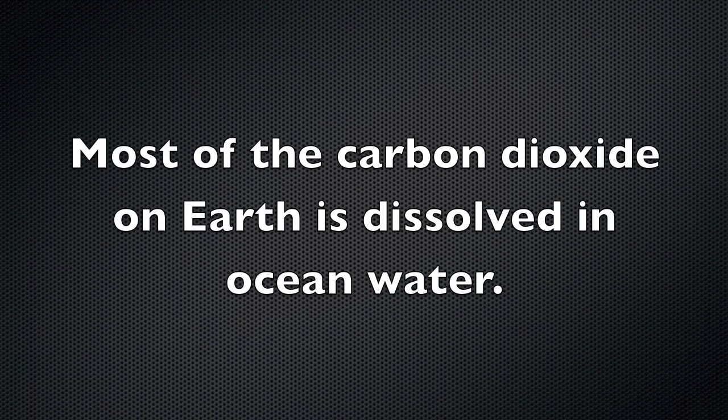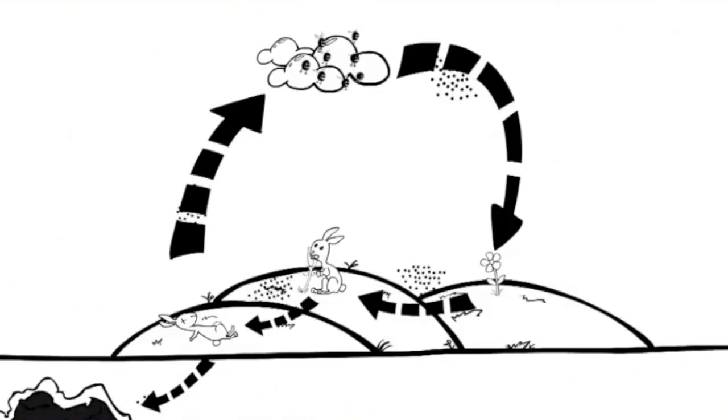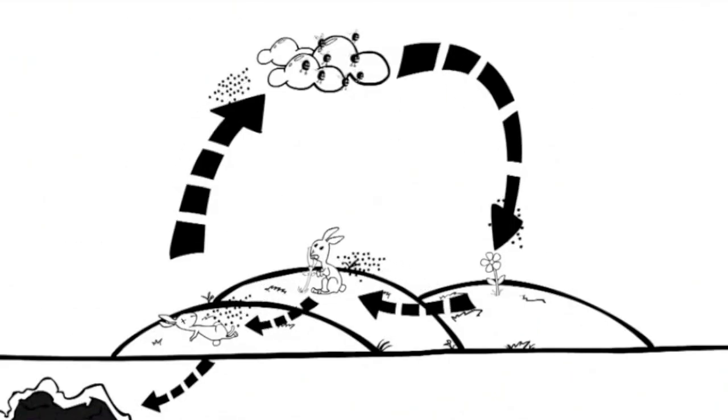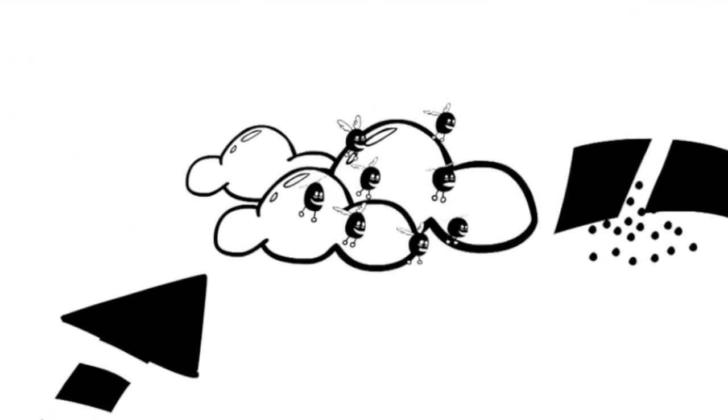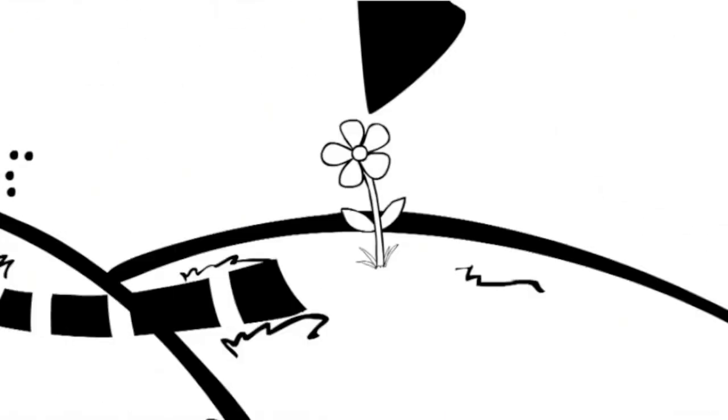Most of the carbon dioxide on Earth is dissolved in ocean water. Most of the carbon is stored underground as fossil fuels. The cycle starts in the atmosphere and then it is absorbed by plants through photosynthesis.